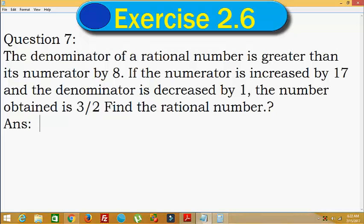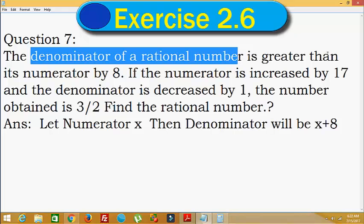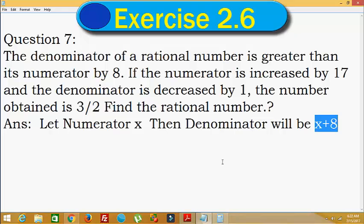So here, let the numerator be x. Then the denominator will be x plus 8. This is as per the statement - the denominator of a rational number is greater than its numerator by 8. If x is the numerator, x plus 8 will be the denominator. So this can be written as x divided by x plus 8.